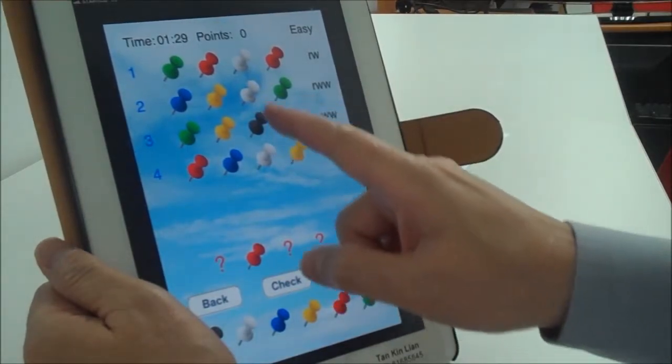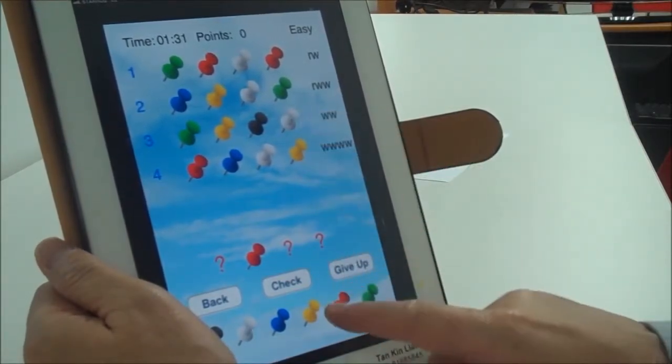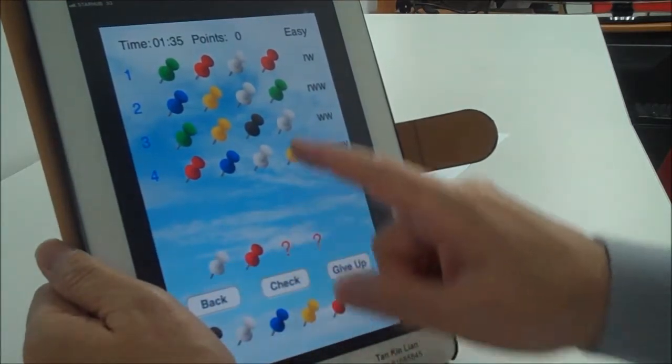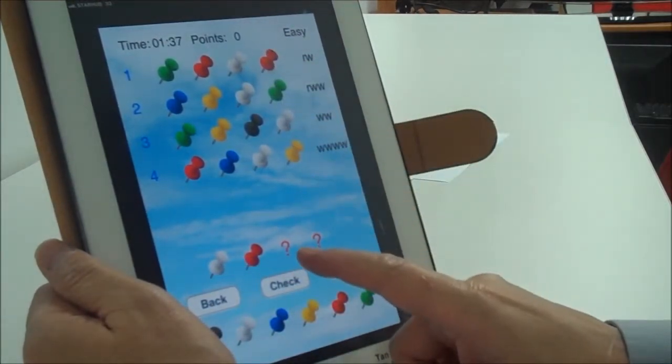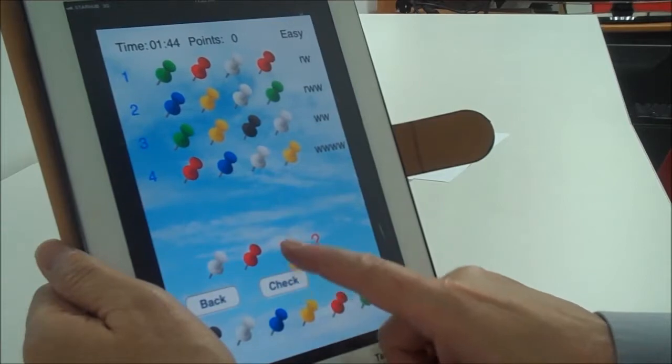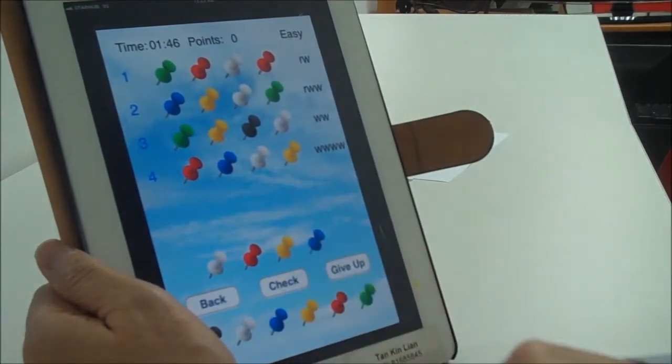Now the white cannot be here. Alright, so the white must be here. And then if I were to now guess the blue and the yellow, the yellow cannot be here. The yellow must be here and the blue must be here.